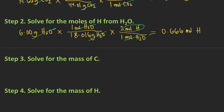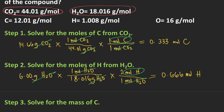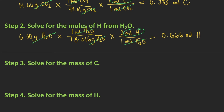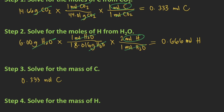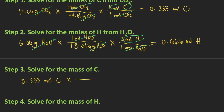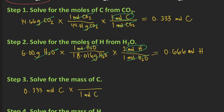Step three: solve the mass of carbon. From step one we got 0.333 moles of carbon, and the molar mass of carbon given in the problem is 12.01 grams per mole. Using dimensional analysis, for every one mole of carbon that's equivalent to 12.01 grams of carbon. The moles of carbon cancel, and you get approximately 4 grams of carbon.